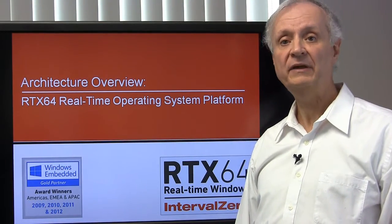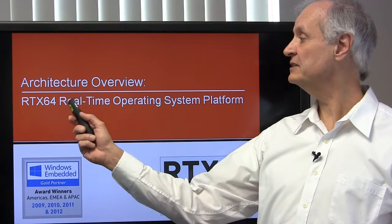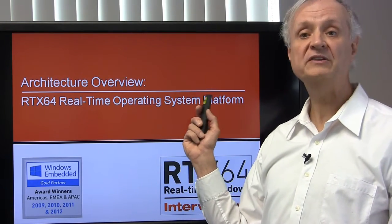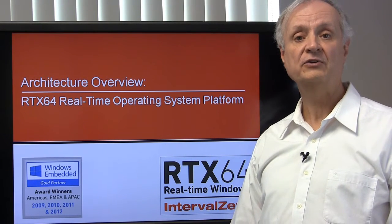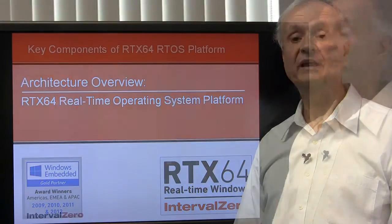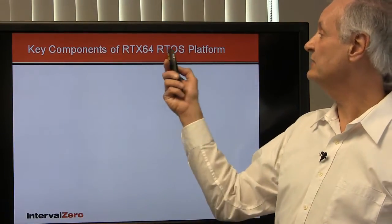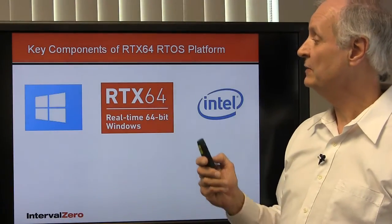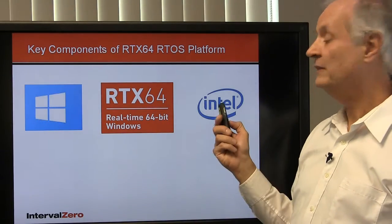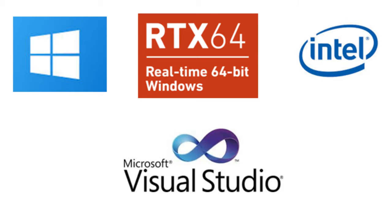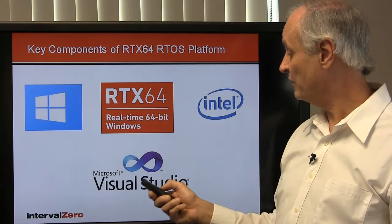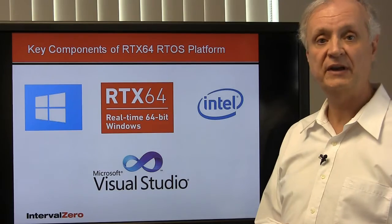Hello and welcome. In the next five minutes we'll look at the architecture of a 64-bit real-time operating system platform that uses today's best commercial off-the-shelf technologies to deliver hard real-time performance for large complex systems. Let's take a look at the key components of this RTOS platform. First we see the Windows operating system, then the 64-bit multi-core multi-processors and the RTX 64 software including deterministic scheduler and symmetric multi-processing capabilities. Microsoft Visual Studio provides the integrated development environment.